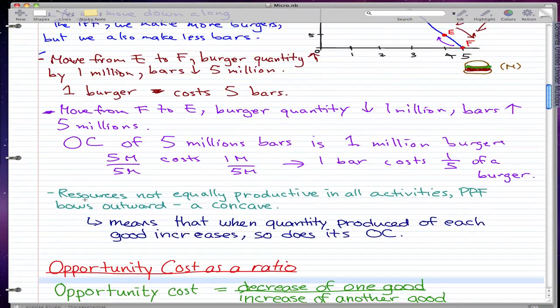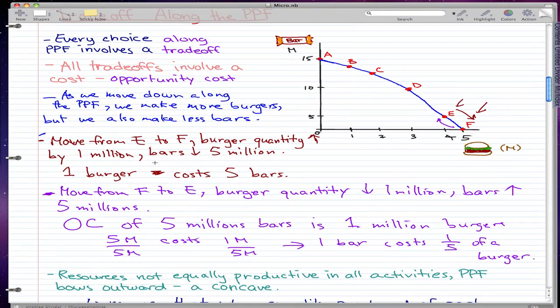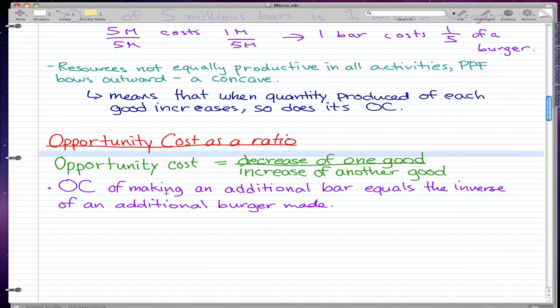So remember in our last video, to increase burgers, that cost is five bars. So the opportunity cost of a burger. Well, so the opportunity cost of burger to make one extra burger, what do we have to give up?